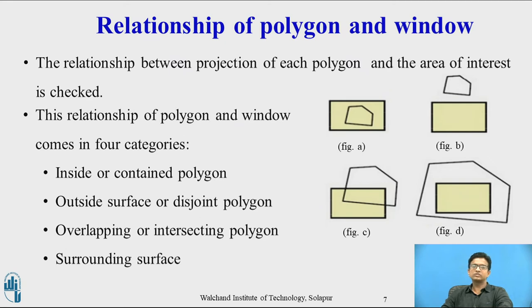An outside surface or disjoint polygon is a polygon that is completely outside the area, as you can see in figure B. Figure C is the polygon that is partially inside the area of interest. In figure D, the polygon completely encloses the area of interest. These are the four types in which we can categorize the relationship of polygon and window.